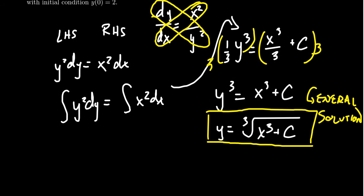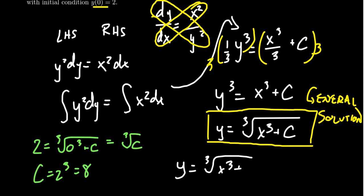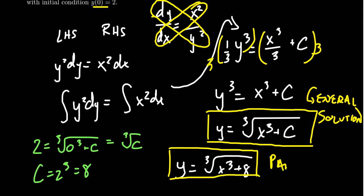Using the initial value y(0) = 2: when x equals 0 and y equals 2, the right-hand side becomes the cube root of c. So the cube root of c equals 2. Cubing both sides gives c equals 8. That gives us our particular solution: y equals the cube root of x cubed plus 8. Even though 8 is itself a perfect cube, we cannot reduce the right-hand side further. This is as simple as we can get, and this is the particular solution we were looking for.